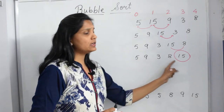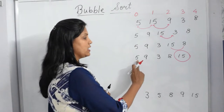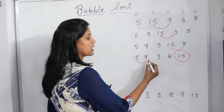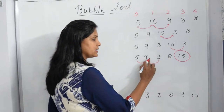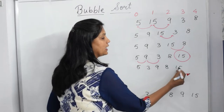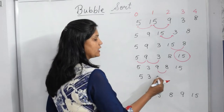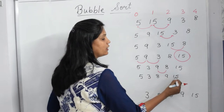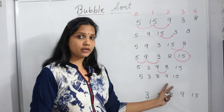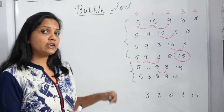But the array is still not fully sorted. We have to repeat the steps again. We start from the first element again, compare first with second — not greater, leave it. Compare second (9) with third (3) — yes, 9 is greater, swap. The array becomes 5, 3, 9, 8, 15. Compare third with fourth: 9 greater than 8, yes, swap: 5, 3, 8, 9, 15. Now the last two elements are sorted, but the whole array is not yet sorted, so we have to repeat these steps again and again.